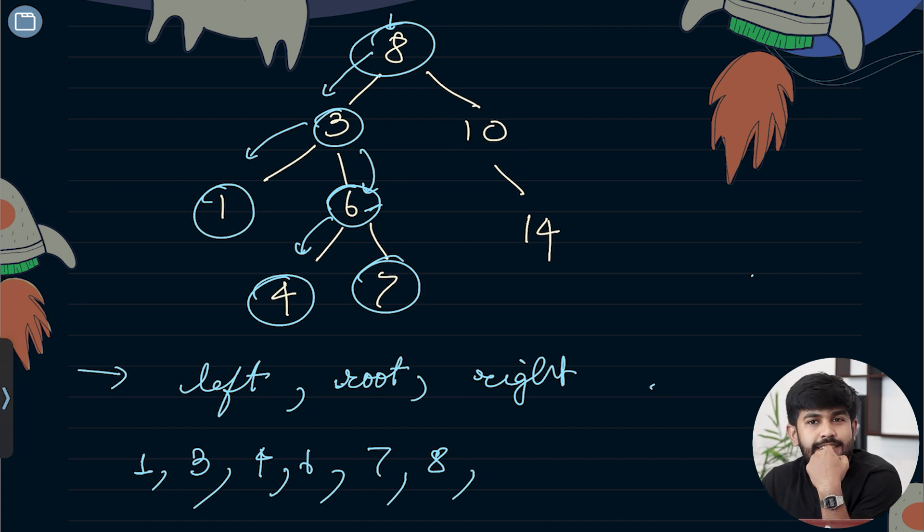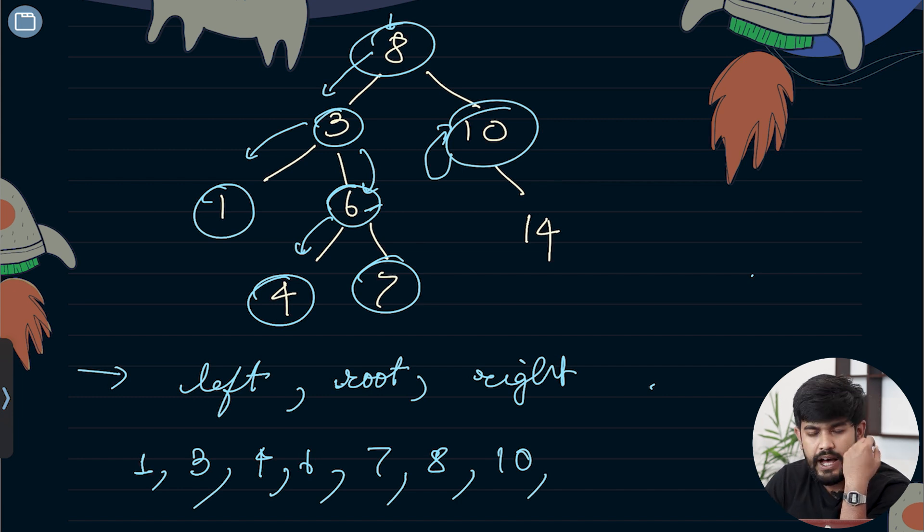On the right side, 10 asks, did you visit my left? 10, you don't have a left, so can I visit you? Yes. I visit 10. After left and root are done, we go to the right and visit 14.